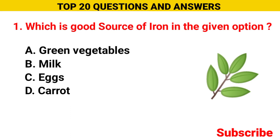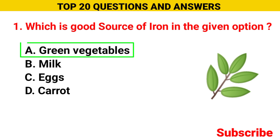Which is the good source of iron in the given option? Option A green vegetable, option B milk, option C egg, option D carrot. The correct option is option A, green vegetable.